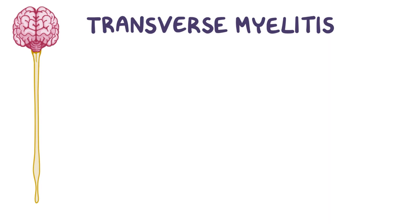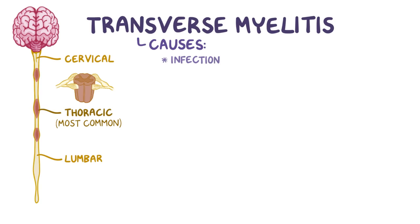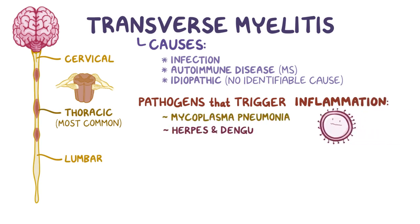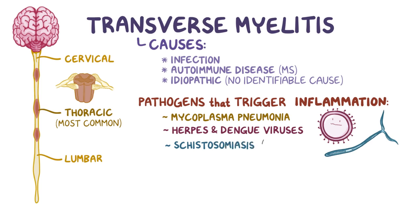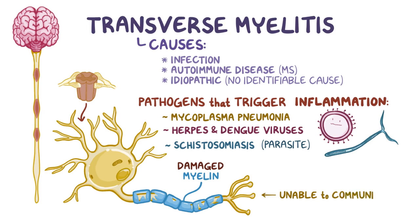In transverse myelitis, there is inflammation of the spinal cord across an entire spinal cord segment, or even multiple segments in some instances. Most commonly the inflammation happens at the thoracic level, but can also occur in the cervical and lumbar regions. The inflammation might be caused by an infection, an autoimmune disease like multiple sclerosis, or it could be idiopathic — meaning there's no identifiable cause. Some well-known pathogens that trigger inflammation include mycoplasma pneumonia, herpes and dengue viruses, and schistosomiasis, which is a parasitic disease. Ultimately, the inflammation damages the myelin or the neurons themselves, causing neurons to become unable to communicate with each other, and messages going up and down the spine fail to get delivered.